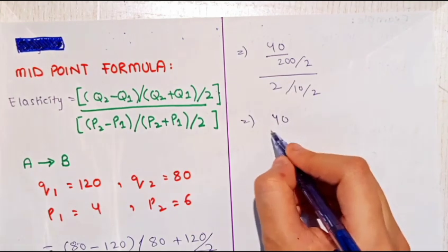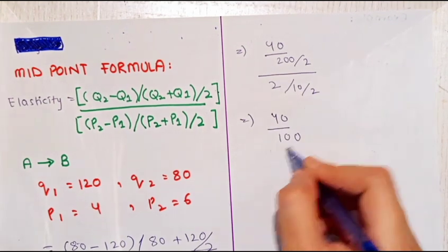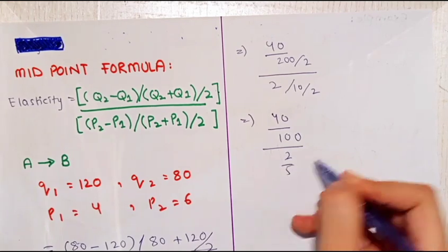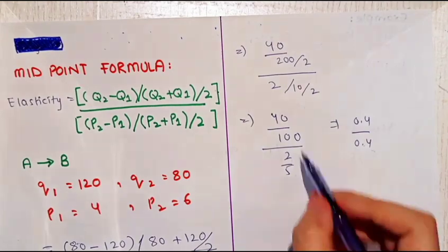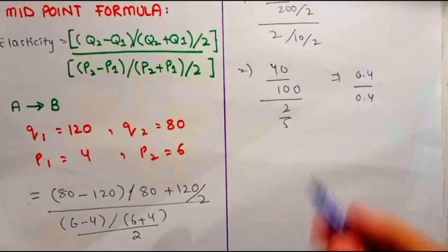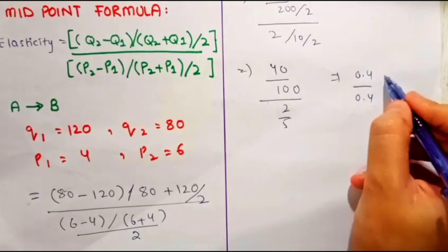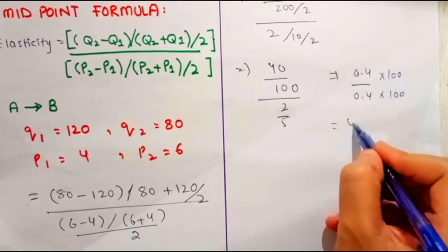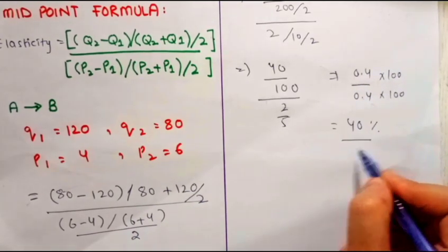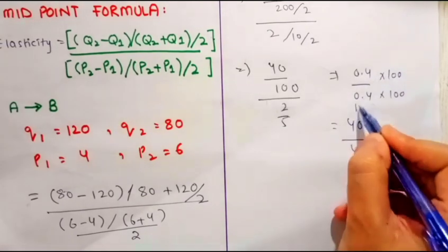Further, we will solve this formula: 40 divided by 100, and 2 divided by 5. This simplifies to 0.4 divided by 0.4. When we apply this formula, we get 40 percent divided by 40 percent.